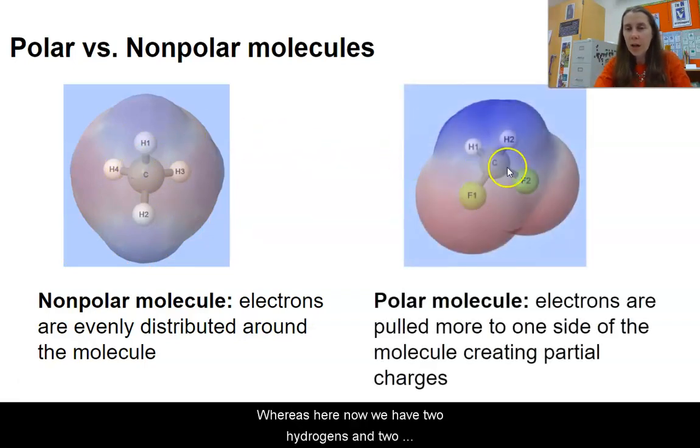Whereas here, now we have two hydrogens and two fluorines. So those fluorines are going to be much more electronegative than the carbon and will pull the electrons down this direction. And that's how you see that red down here, because that's the negative side of the molecule and the blue up here being the positive side.